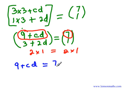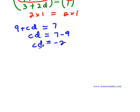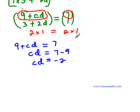We can simplify equation 1 further to make CD the subject: CD equals 7 minus 9, which gives CD equals negative 2. But we can't find D or C from that alone because we have two unknowns. So let's examine the second entries in the corresponding matrices.